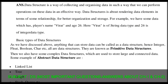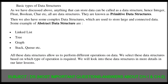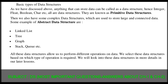We also have complex data structures which are used to store large and connected data. Some examples of abstract data structures are linked list, tree, graph, stack, queue, etc. All these data structures allow us to perform different operations on data. We select a data structure based on which type of operation is required, and we will look into these data structures in more detail chapter by chapter.